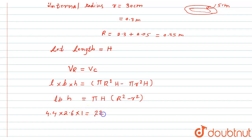Pi is 22 by 7 into H, which we have to calculate. Capital R we have calculated, that is 0.35 bracket square minus small r is 0.3 bracket square.